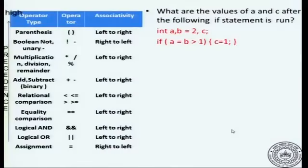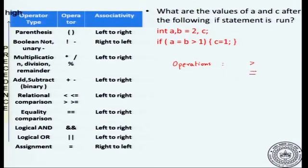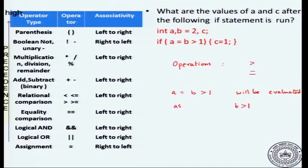Now let us look at a few tricky examples. If you have an expression of the form: if a equal to b greater than 1 then c equal to 1. Let us see what happens here. We sort operations by precedence: there is the greater than symbol which has higher precedence over the equal to symbol.